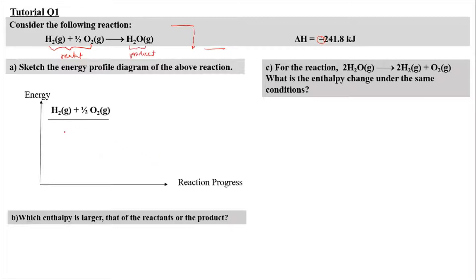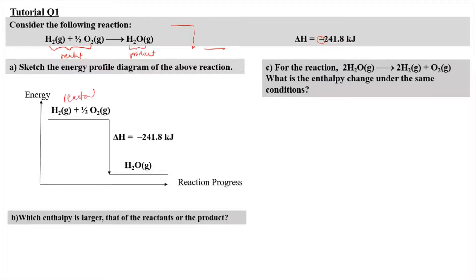Our reactant is hydrogen gas and oxygen gas, and our product is water vapor. The energy difference between the product and the reactant is negative 241.8 kilojoules. It is important to write the specific species given in the question, not just write 'reactant'. If you write 'reactant', then your energy profile diagram is wrong — you have to be specific to the question given.